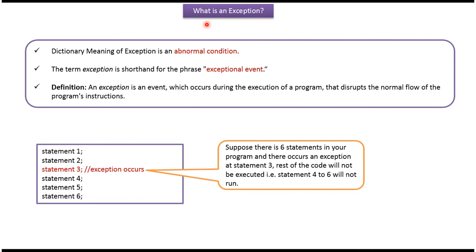Hi, in this video tutorial I will cover what is an exception. The dictionary meaning of exception is an abnormal condition. The term exception is shortened for the phrase 'exceptional event.' The definition of an exception is: an exception is an event which occurs during the execution of a program that disturbs the normal flow of the program's instructions.